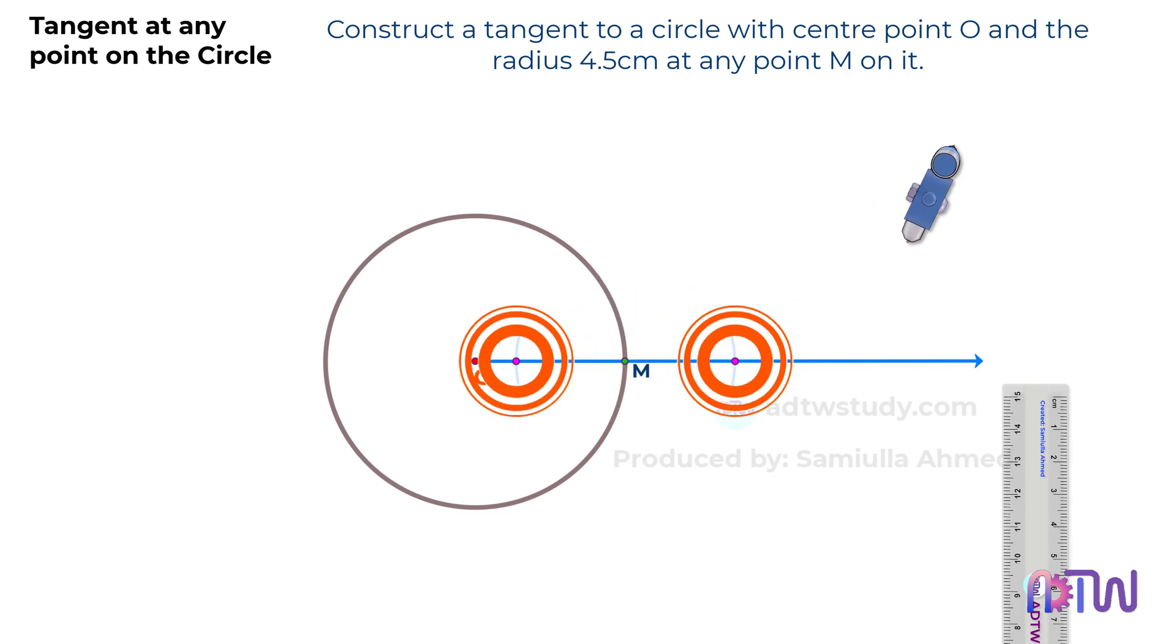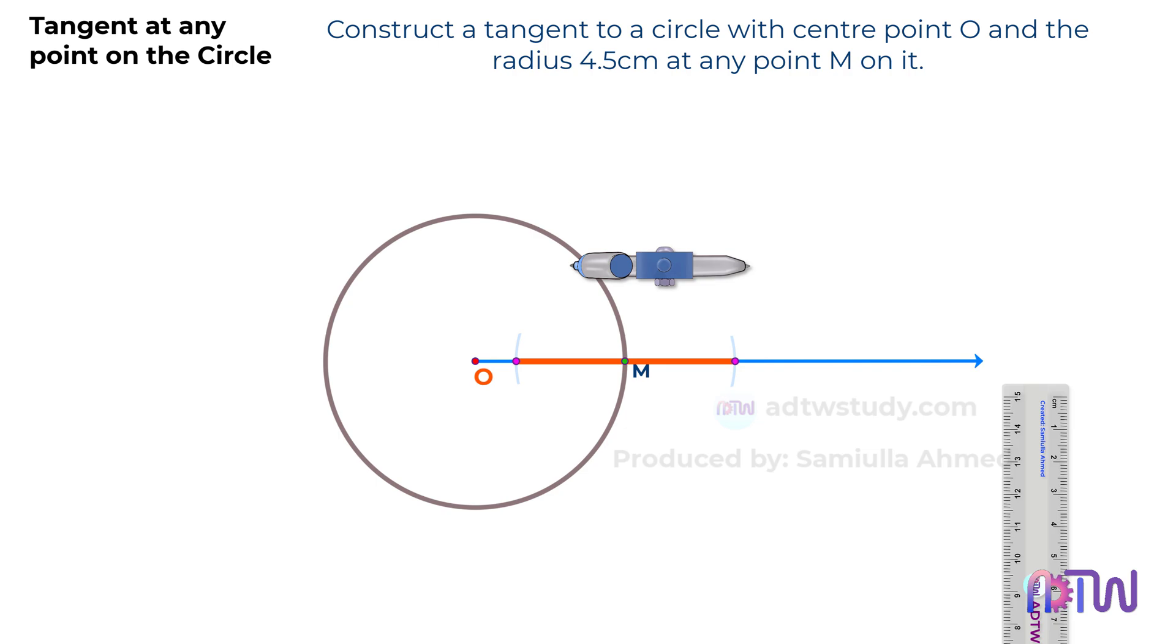After this, adjust the compass to a length more than half of this distance. Then, using these two points as the center, cut the arcs as shown.